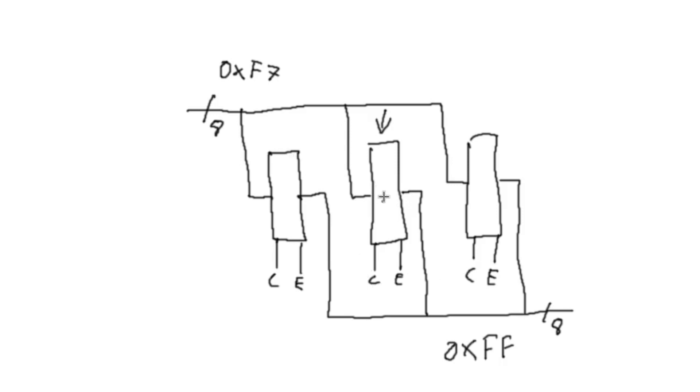So if we want to get the content of this register, which has that F7, we would select the enable line for that register and it would dump the F7 onto the bus. Likewise, if we wanted the contents of this register, we just enable it. Same with this register.